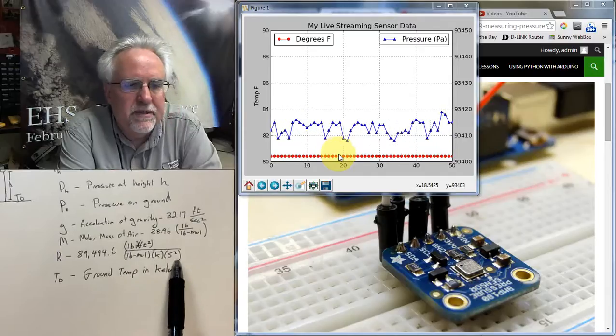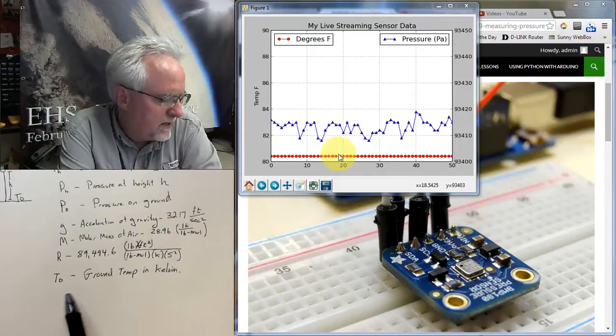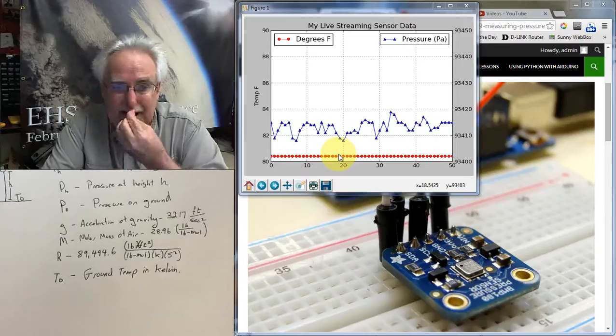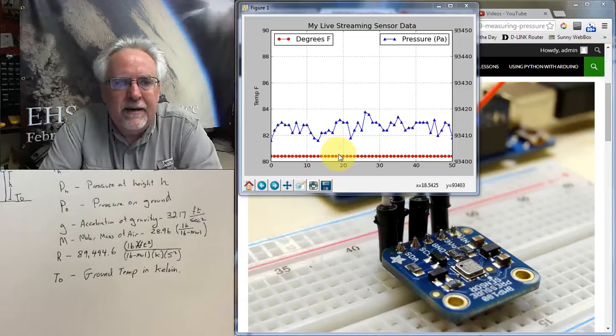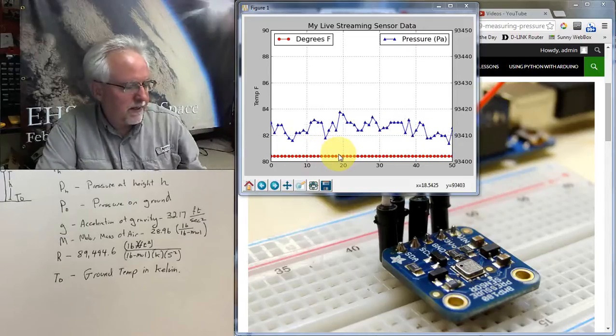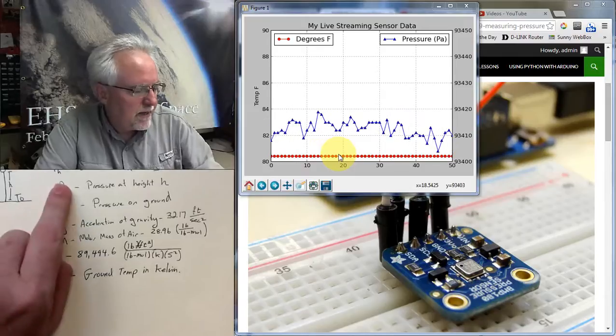degree Kelvin, second squared. And then T0 is the ground temp in Kelvin. So I kind of had to be careful with all of my units there, but now we should be able to calculate pH